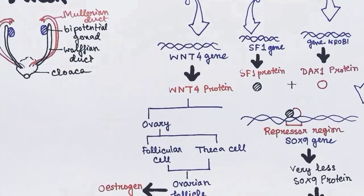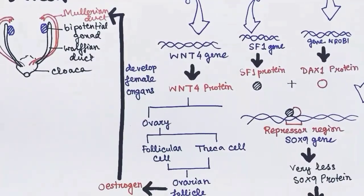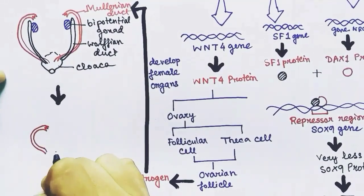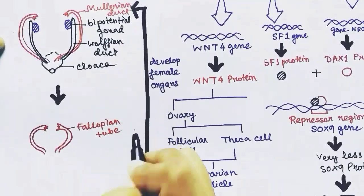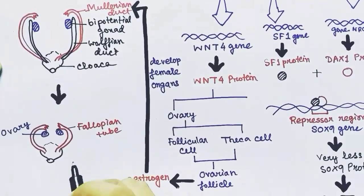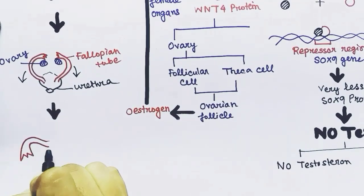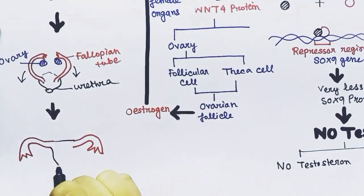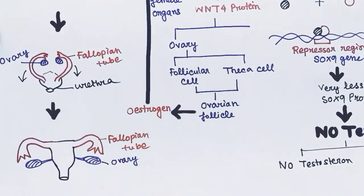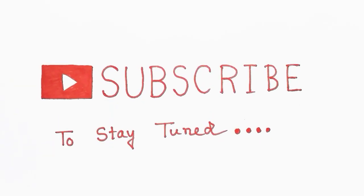As a result, the ovary and follicles are formed and produce estrogen hormone, which helps the Müllerian duct develop into female reproductive organs — especially the fallopian tube. In the absence of testosterone, the Wolffian duct is destroyed and cannot form any male structures. The bi-potential gonads become the ovaries, the Müllerian duct becomes the fallopian tube, the cloaca forms the urethra, and the urethral and vaginal openings are separate in females, though one opening was shown for simplicity.